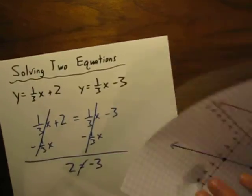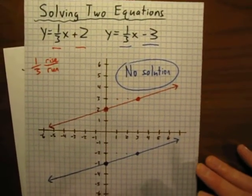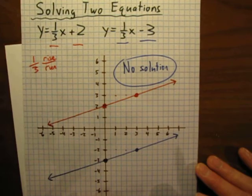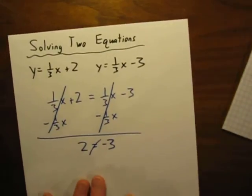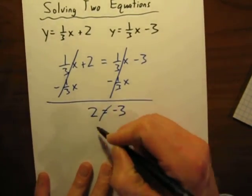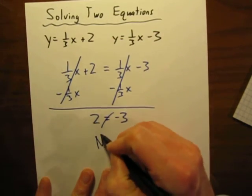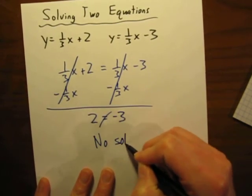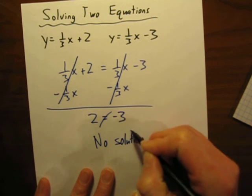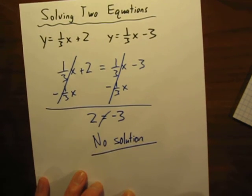And then, if you wanted to verify it, you could go back and you could graph it like this to verify that for yourself. But, when you get a solution like this, 2 = -3, the lines are parallel, we will say, no solution. So, there is our answer.